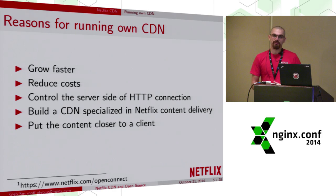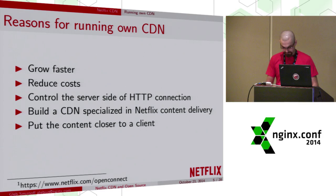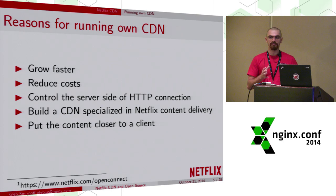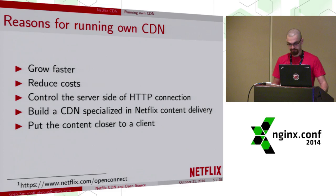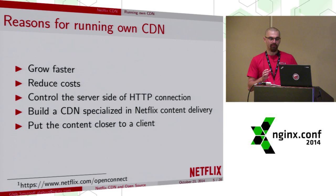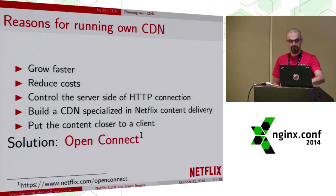Controlling the server side also gives us the possibility to run our specific TCP congestion control algorithms, to run some special HTTP modules, and so on. This all means that we are building a specialized CDN — not a generic one that can serve anything, but a CDN that can serve our video. A specialized product works better than a generic one. And finally, we want to spread our CDN across countries and put the content closer to clients, to reduce all the mentioned internet anomalies. The answer to all this is Open Connect.